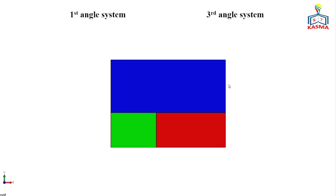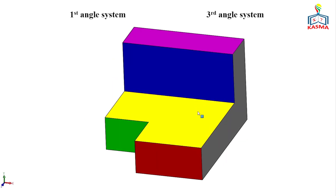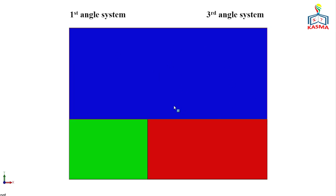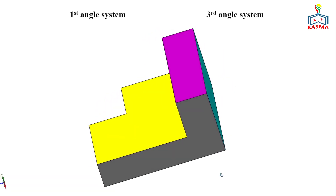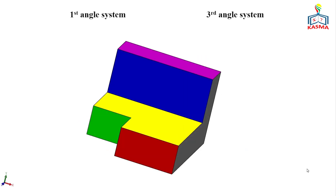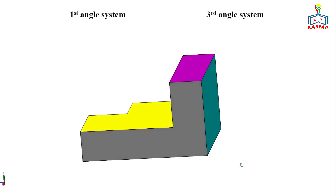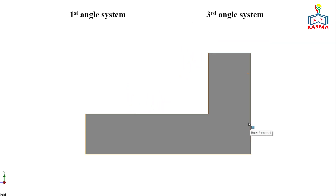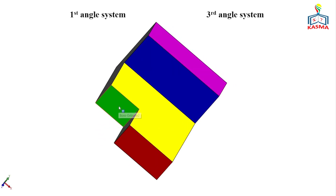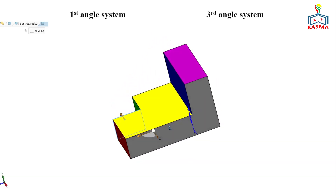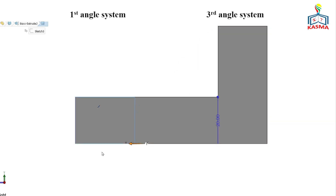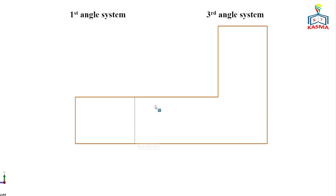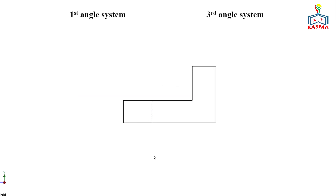This is the front view — we are looking from the front direction and see three surfaces. When looking from the right direction, you see an L-shape. There is also a surface behind this, which we don't see because it's covered. We have to project it using a hidden line, meaning there is a surface or feature covered by other surfaces, and the hidden line shows it.